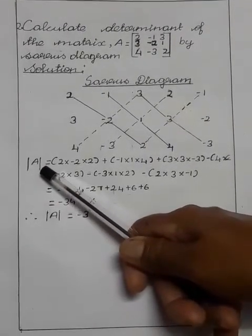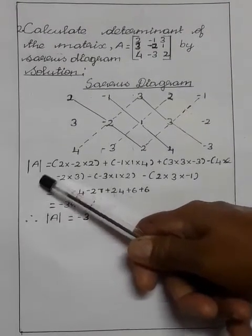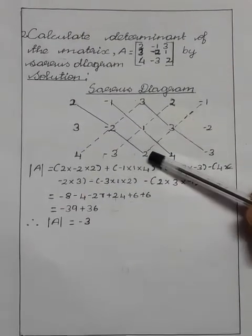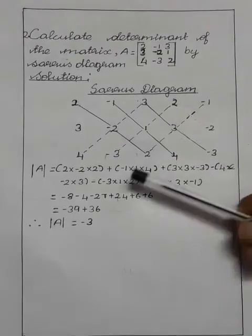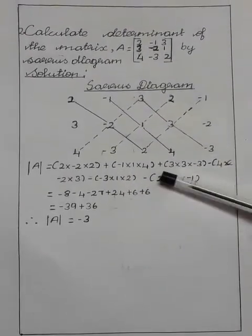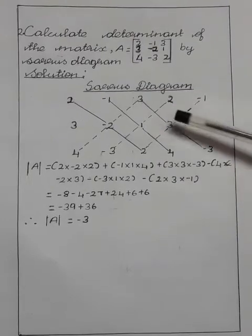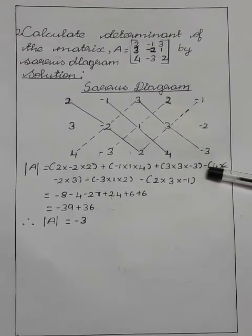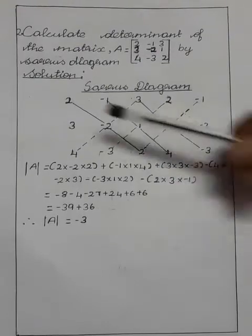Determinant of A matrix is equal to 2 into minus 2 into 2 plus minus 1 into 1 into 4 plus 3 into 3 into minus 3 minus. As of the downward formula, add. Upward, subtract.